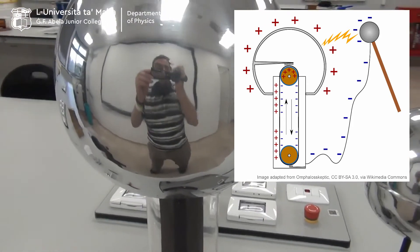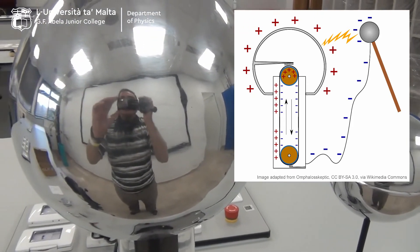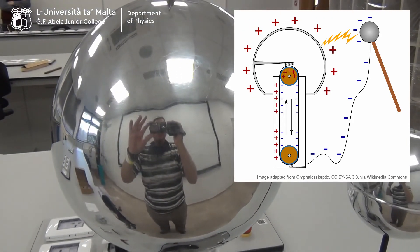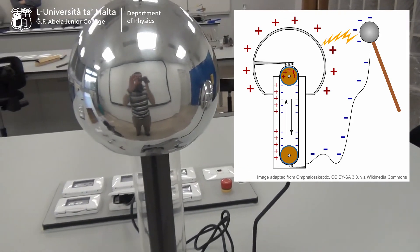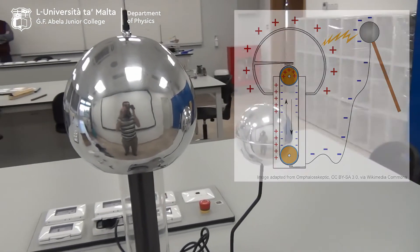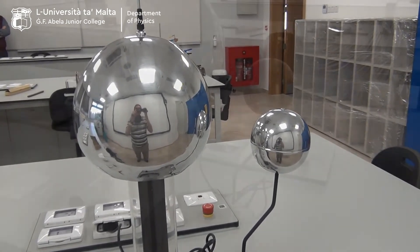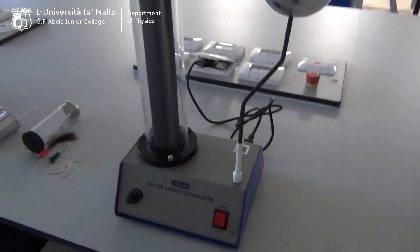When the dome in the upper part builds up enough electric charge, the voltage becomes so high that it will spark between these two domes. We shall now switch on the Van de Graaff generator.